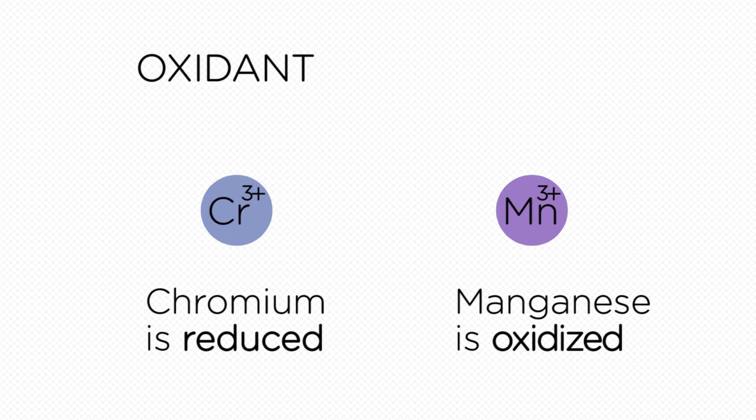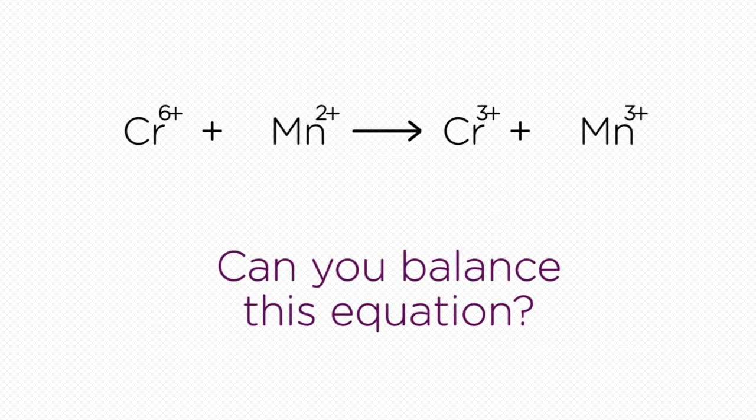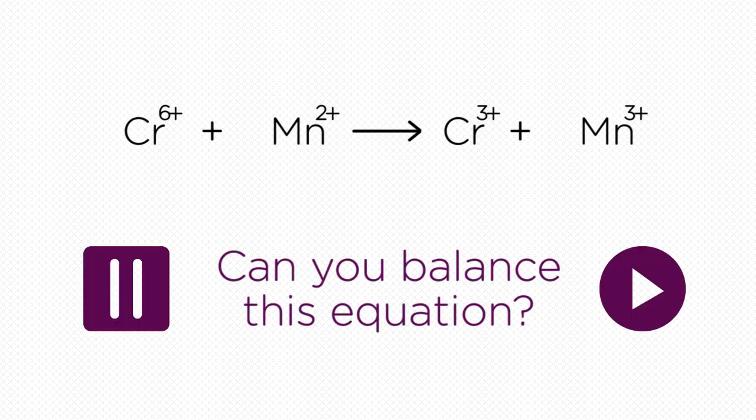In the same way, manganese reduces chromium to chromium 3 plus, which is a stable oxidation state. Can you balance this equation? Pause the video whilst you work it out. Ready for the answer? OK.